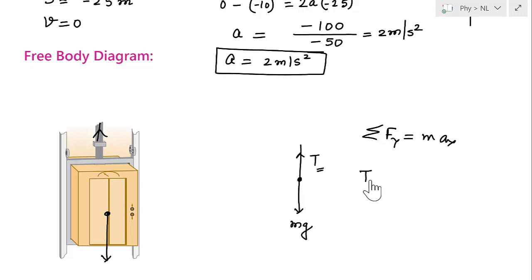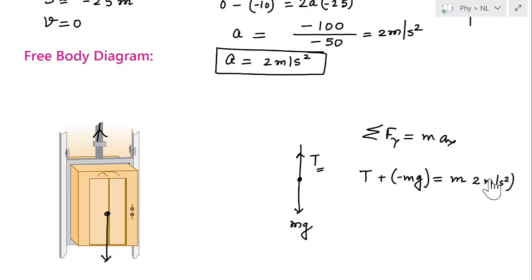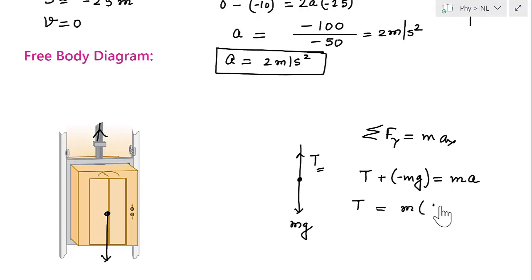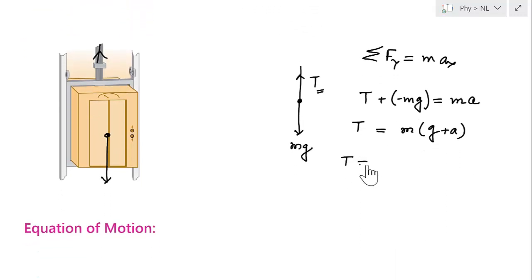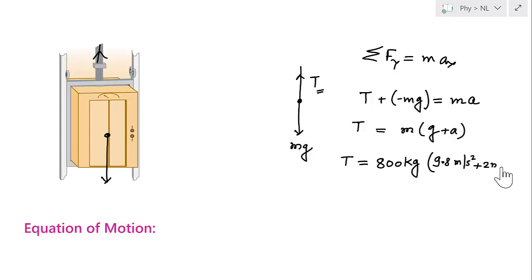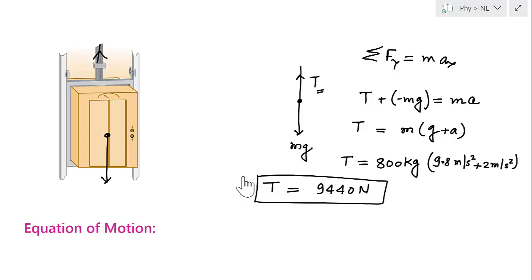The forces in the upward direction give T, and in the downward direction we have mg. So: T − mg = mA, which gives T = m(g + A). Substituting values: m = 800 kg, g = 9.8 m/s², A = 2 m/s². Therefore T = 800 × (9.8 + 2) = 800 × 11.8 = 9440 Newtons. This is the tension force in the cable.